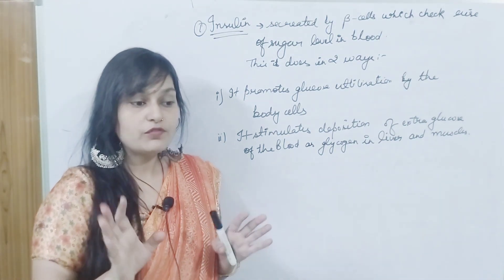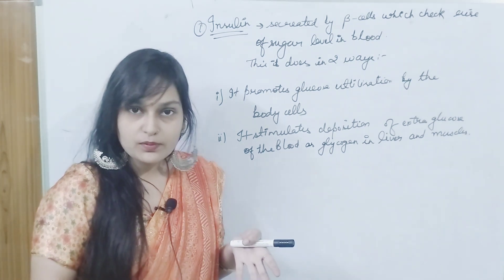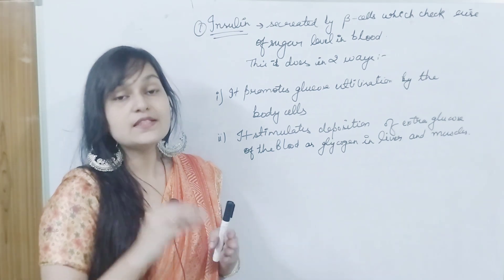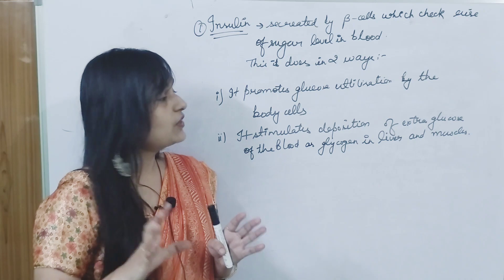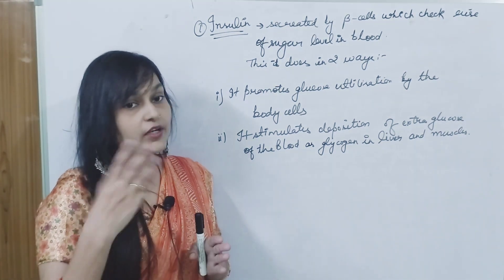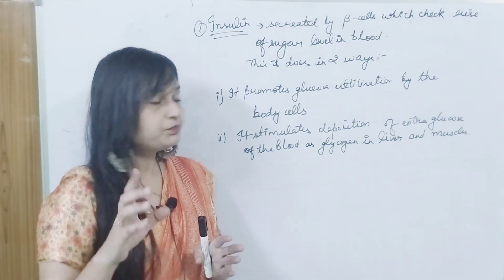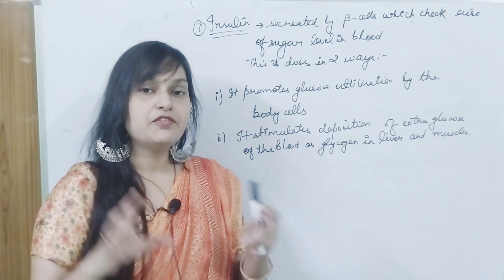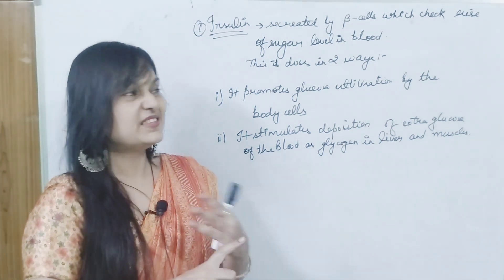And how do we store the glucose? When the glucose is stored in the body, then the body needs glucose. What can happen in excess amount of glucose? It stimulates the deposition of excess glucose. Excess glucose of the blood will convert into glycogen. Where will it store? In liver and muscles. This is a function of your beta cells.